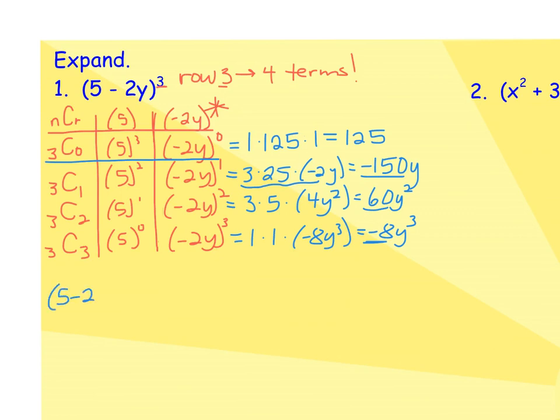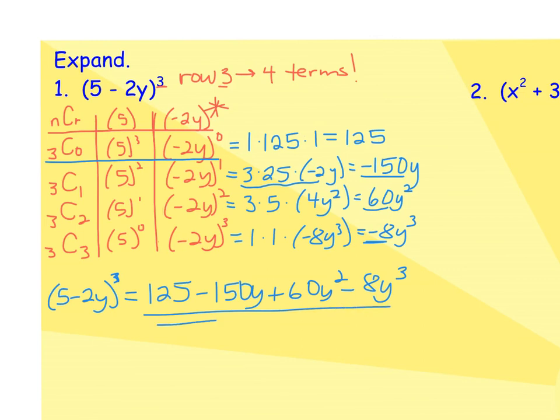What this means is we're going to have addition and subtraction problems. Therefore, 5 minus 2y to the third power, in standard form, would be 125 minus 150y plus 60y squared, last but not least, minus 8y to the third. There's your binomial expansion.